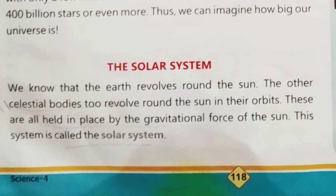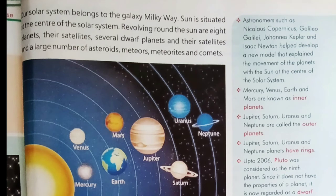We know that the Earth revolves around the sun. The other celestial bodies too revolve around the sun in their orbits. These are all held in place by the gravitational force of the sun. This system is called the solar system. Our solar system belongs to the galaxy Milky Way.